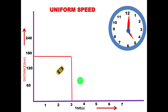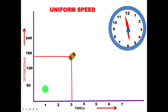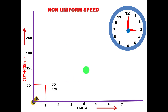Every one hour, the car travels 60 km. At 5 o'clock, the car reaches 180 km by 6 o'clock. So every one hour the car covers a distance of 60 km, meaning this car is in uniform speed.